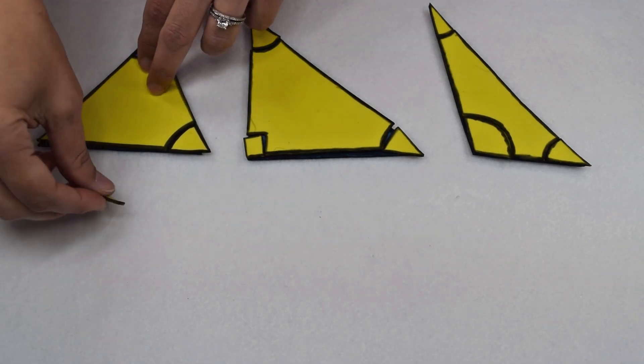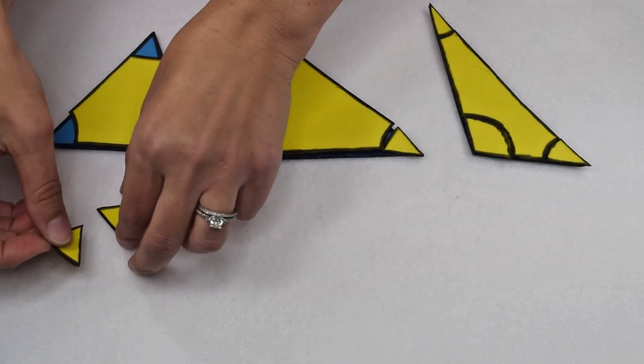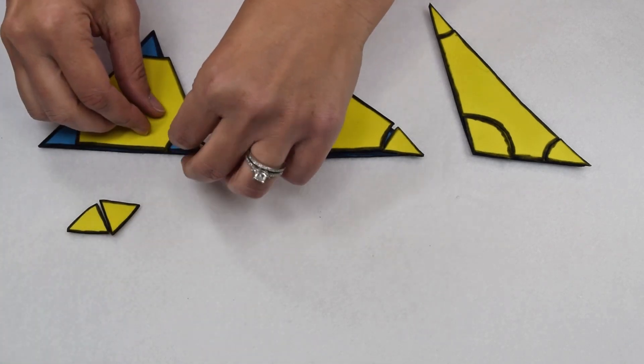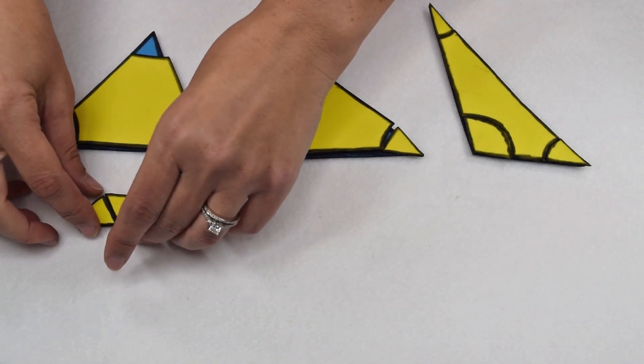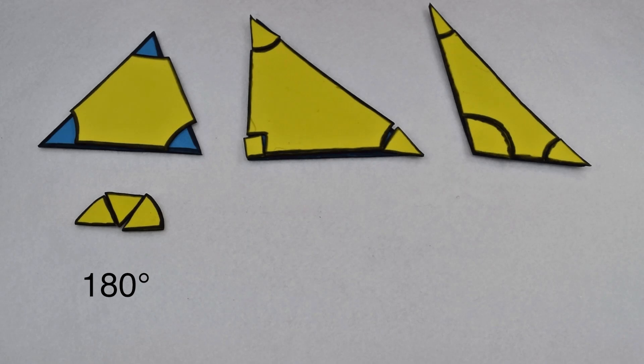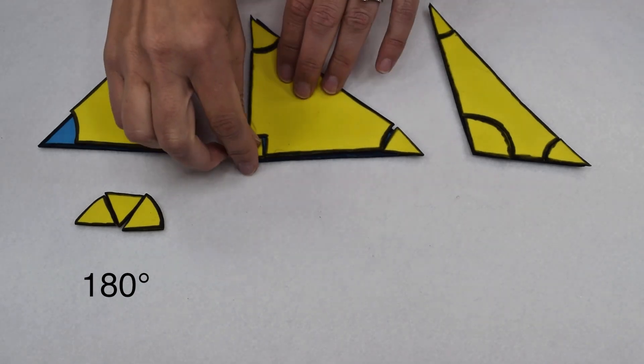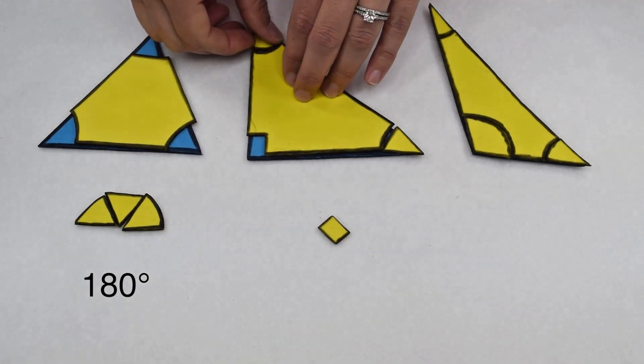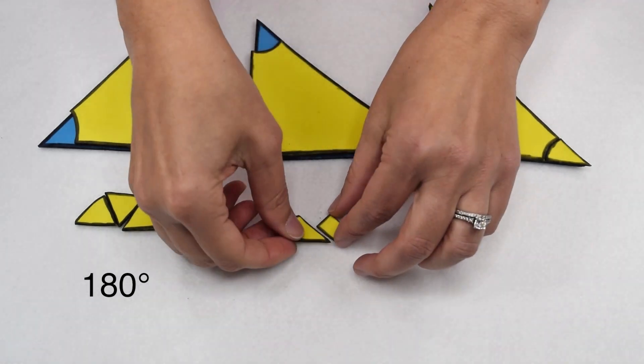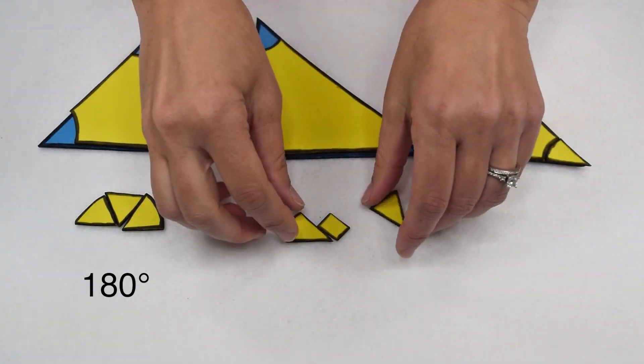Here we have our equilateral triangle. We saw that if we took the vertices, sliced them off, we could arrange them to make a straight line to show us the interior angle sum of 180 degrees. We also have a right angle triangle and a scalene triangle. If the interior angle sum of any triangle is going to be 180 degrees, we should be able to do the same thing with the other vertices.